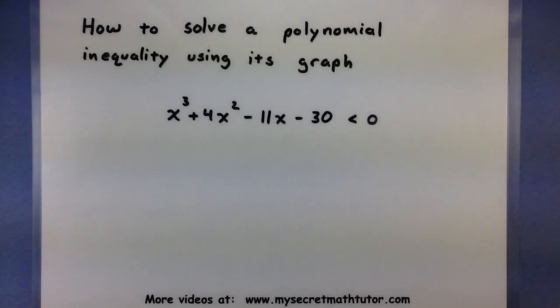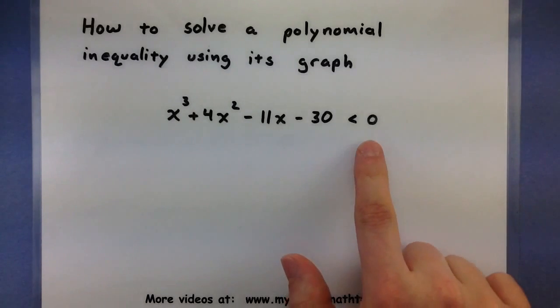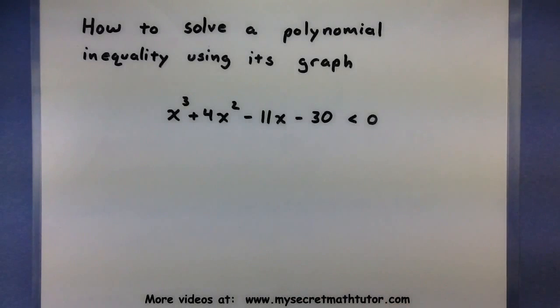Alright, so the example problem I want to look at is x cubed plus 4x squared minus 11x minus 30 is less than 0. With all of the inequalities, it's easier if you get them in relation to 0. So this one's already set up and good to go, and we want to start thinking about its graph.